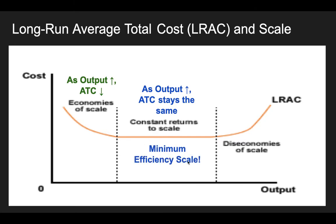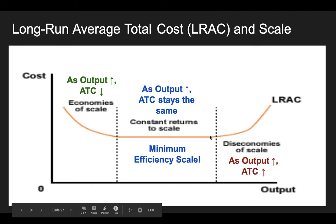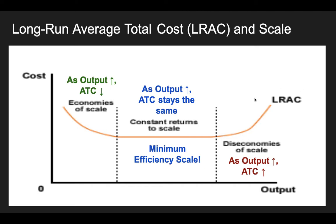This is also what we call minimum efficiency scale. Finally, we get to a period of our business where we're experiencing dis-economies of scale. With dis-economies of scale, as output increases, ATC also increases. That's not a very good place to be because as we want to produce more, we're going to have to pay more per unit — so we should maybe scale back. So that's how we measure average total cost in the long run: there's a downward sloping portion — economies of scale — there's a constant portion, and there's an increasing portion.